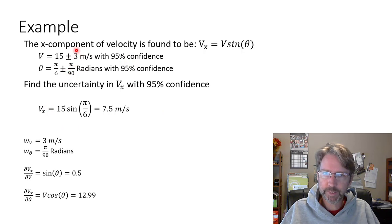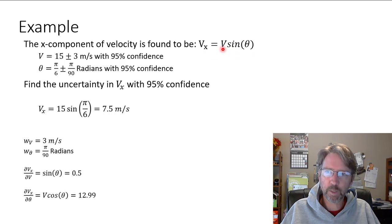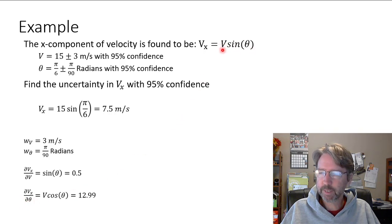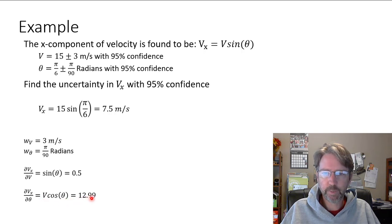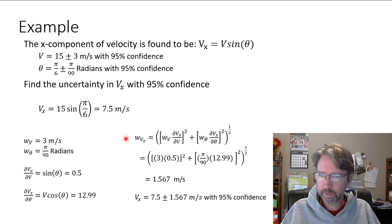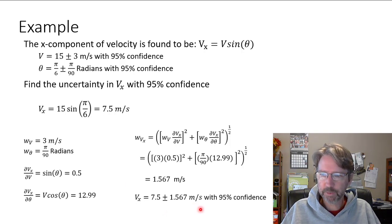We find the uncertainties in the individual measurements. The partial derivative of vx with respect to v — treating θ as constant — gives sin(θ), which equals 0.5 at our value of θ. The partial derivative of vx with respect to θ — treating v as constant — gives v·cos(θ), which equals 15·cos(π/6) = 12.99. Combining into the root-sum-square formula gives an uncertainty of 1.567 m/s. So our answer is 7.5 ± 1.567 m/s at 95% confidence.